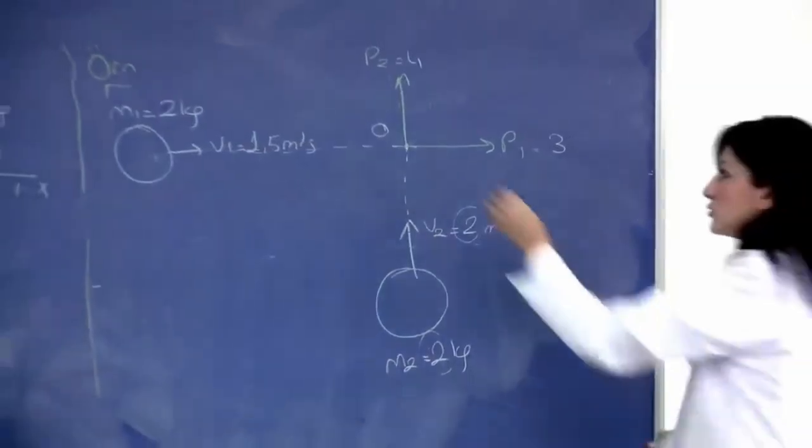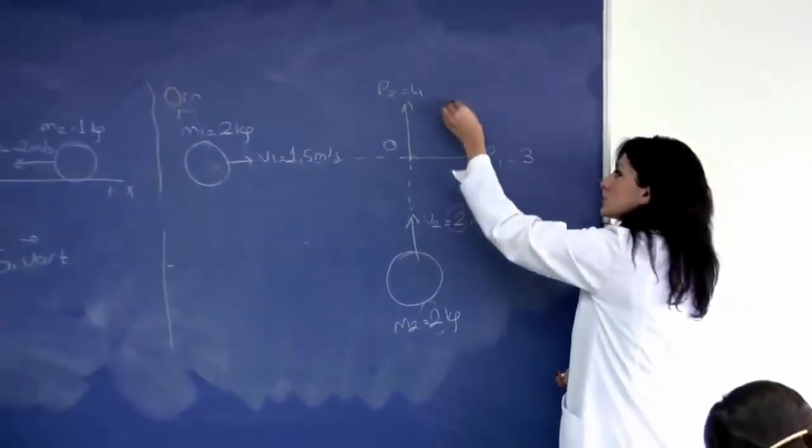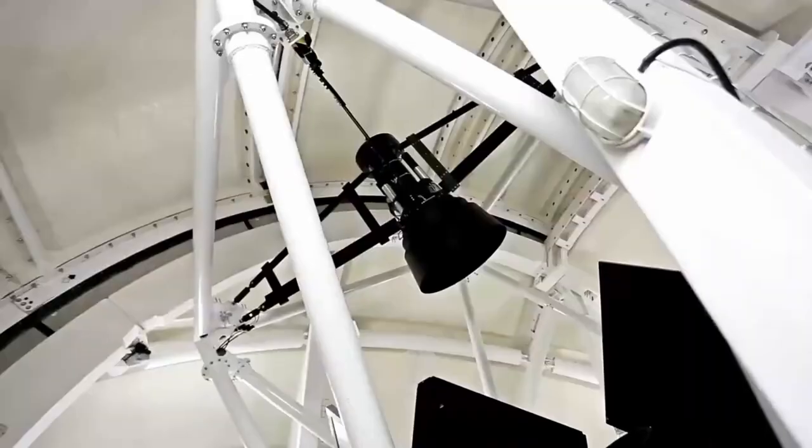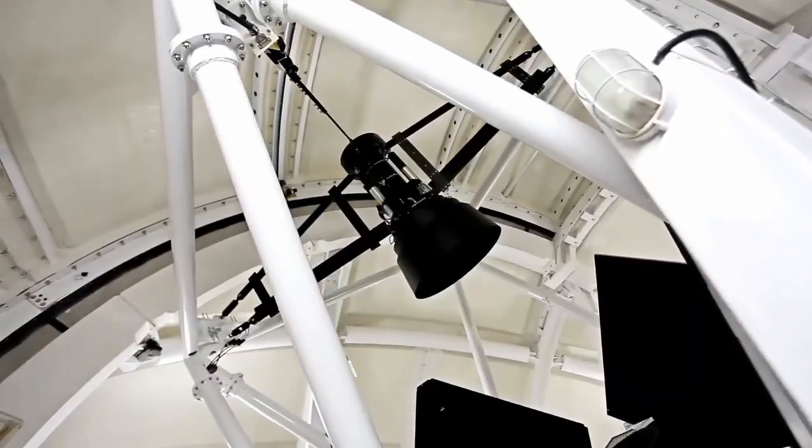The data implied that this object likely originated outside the CO2 ice line of its original star system in a setting much colder than our comet's zones of formation.